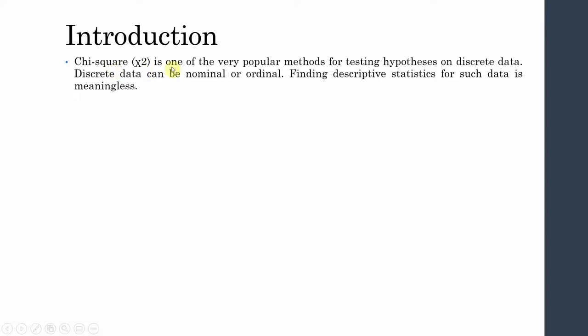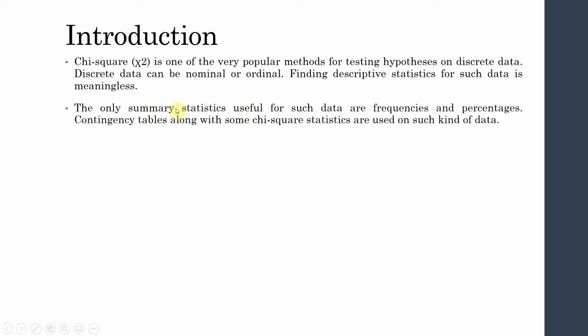Chi-square is one of the very popular methods for testing hypotheses on discrete data. Discrete data can be nominal or ordinal. For example, religion is nominal scale data, while position is ordinal scale data. Finding descriptive statistics for such data is meaningless.